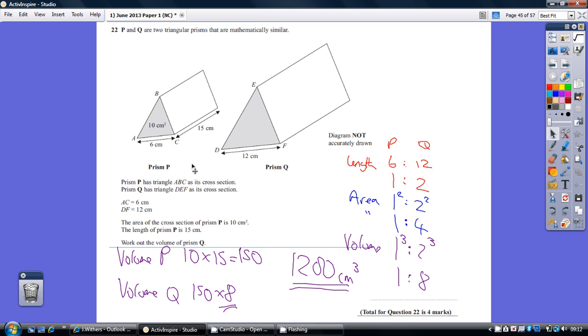Alright, so we kick off by working out our various ratios of P to Q. So our length ratio, we look at the length that we have in common, it's the base here, so 6 to 12. So our length ratio is 6 to 12, which simplifies to 1 to 2.